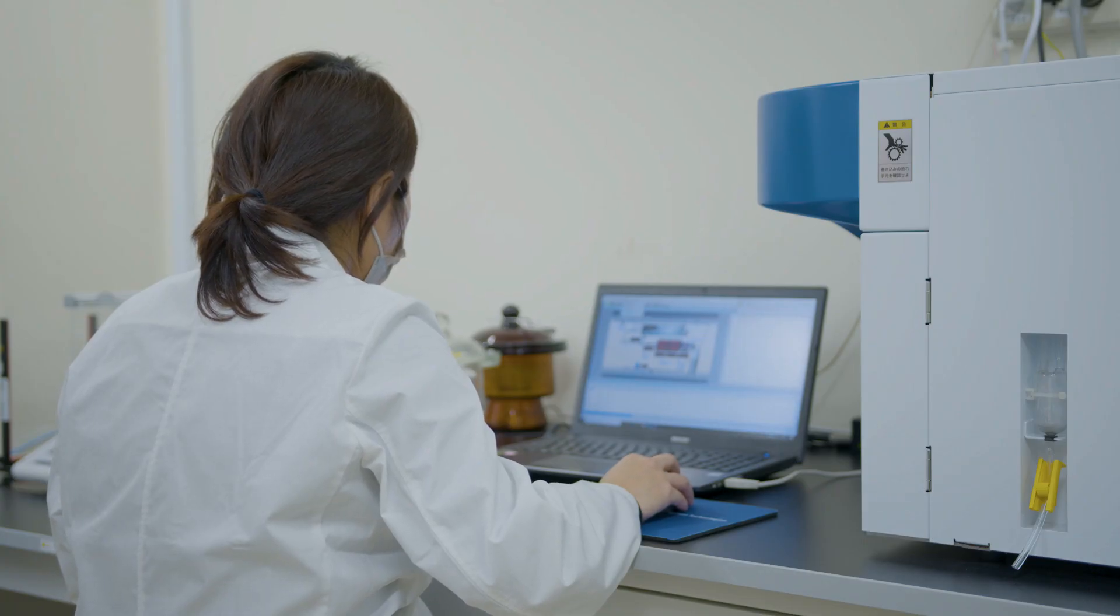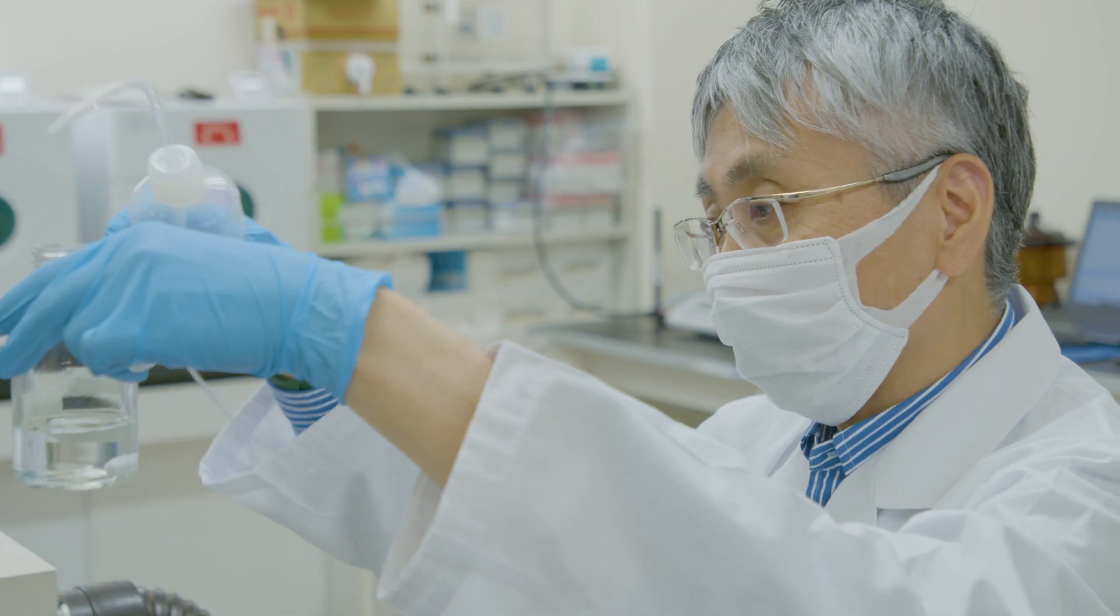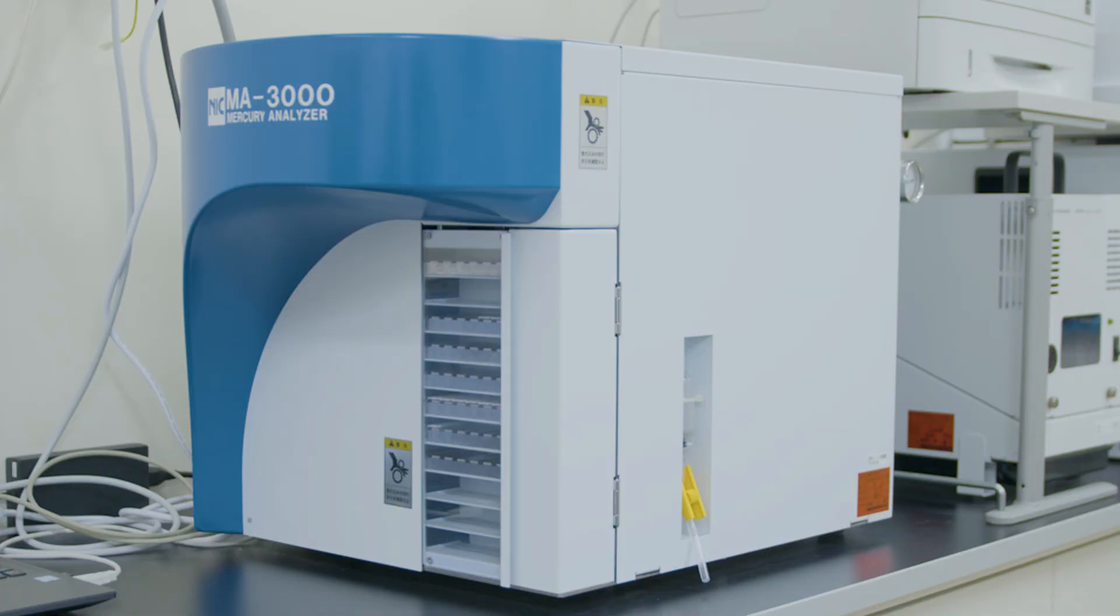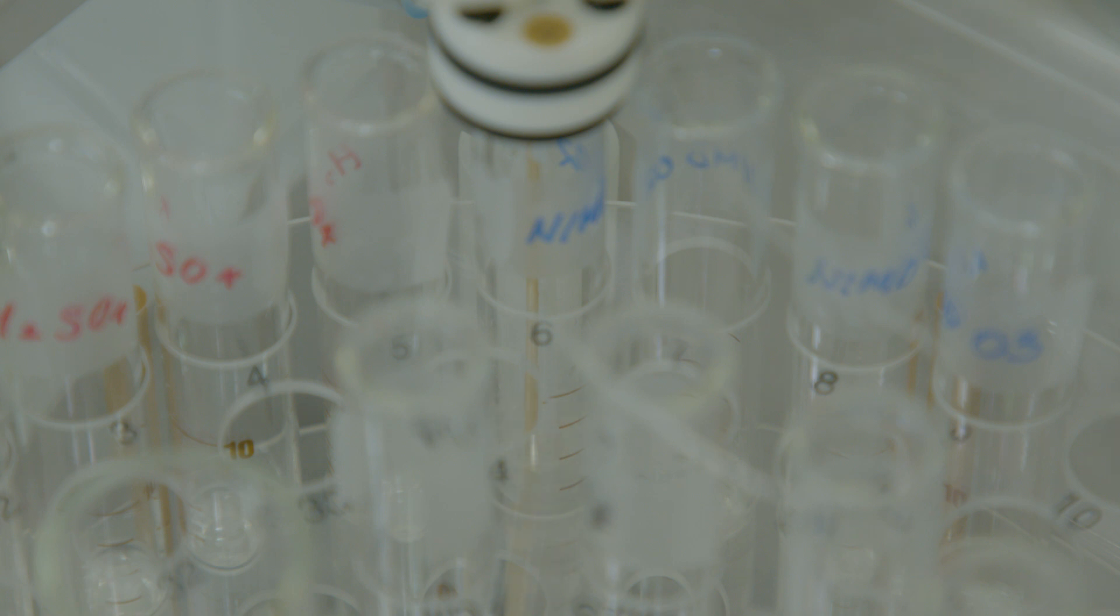Two of the most widely used methods in this proficiency testing are thermal decomposition atomic absorption spectrometry and cold vapor atomic absorption spectrometry. These methods are particularly effective for analyzing total mercury levels in human biomonitoring samples.